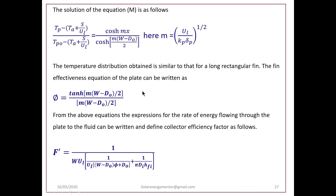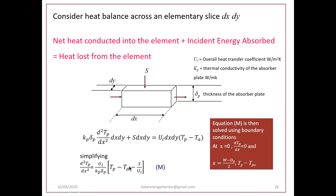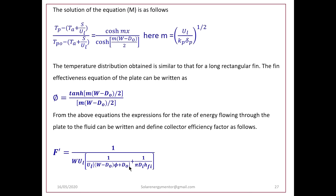We solve this differential equation by integrating and applying boundary conditions to get the temperature distribution along the plate. The solution expresses temperature distribution in terms of w, d_o, and m, where m equals the square root of U_L / (k_p · δ_p). The temperature distribution obtained is similar to that for a long rectangular fin, which we have covered in heat transfer.